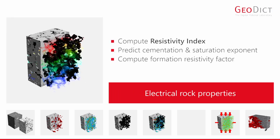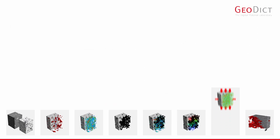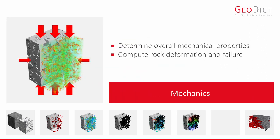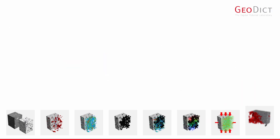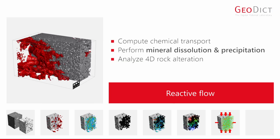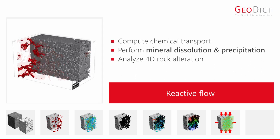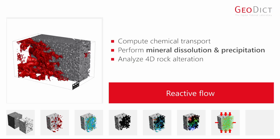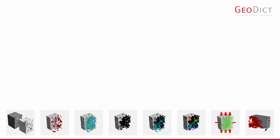Compute the resistivity index and further properties to determine the oil content in reservoir formations. Apply GeoDICT to determine the overall mechanical properties of reservoir rocks and compute deformation and failure. Combine GeoDICT capabilities to reach advanced workflows, such as reactive flow to compute mineral dissolution and precipitation.